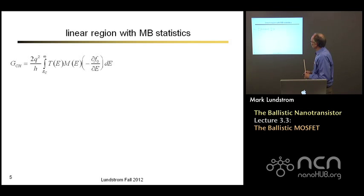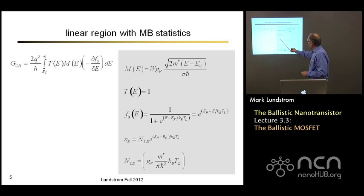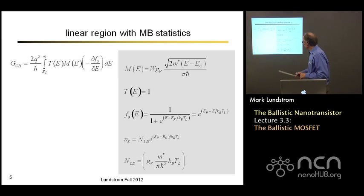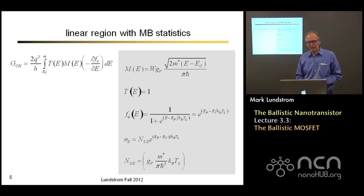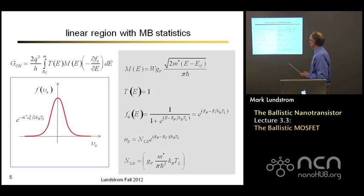Here's our expression under small bias. We know how to compute the number of channels as a function of energy. We assume ballistic conditions, so transmission is 1. The Fermi function under Maxwell-Boltzmann statistics becomes an exponential — we ignore the 1. That means the sheet carrier density, in carriers per square centimeter, is an effective density of states times e to the (Fermi energy minus bottom of conduction band) over kT. These expressions can be used to evaluate the channel current.